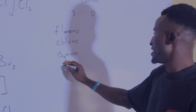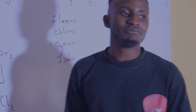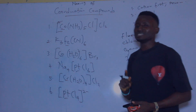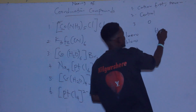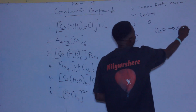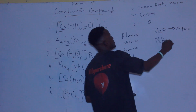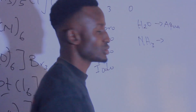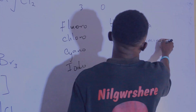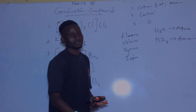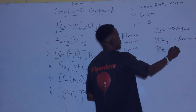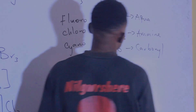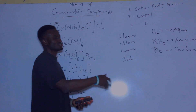Azide as a ligand will be azido. The only exception to this rule is the neutral ligand. Water as a neutral ligand is called aqua. NH3 (ammonia) serving as a ligand will be called amine. And CO, for instance, would be carbonyl as a ligand.